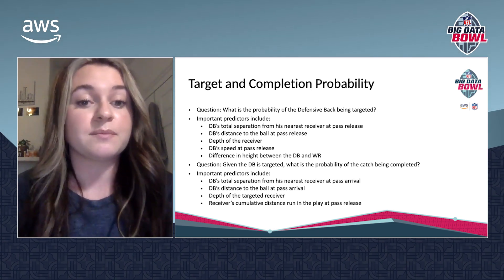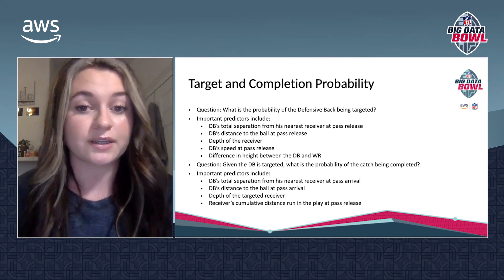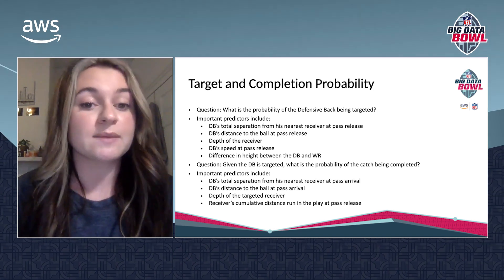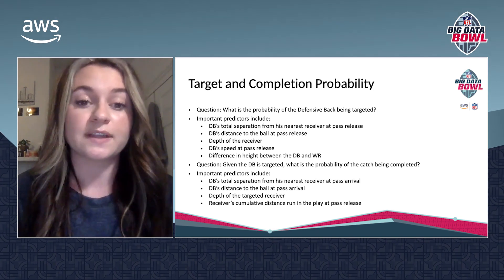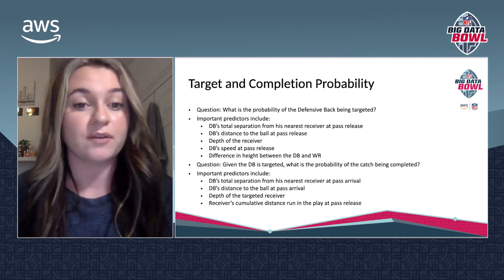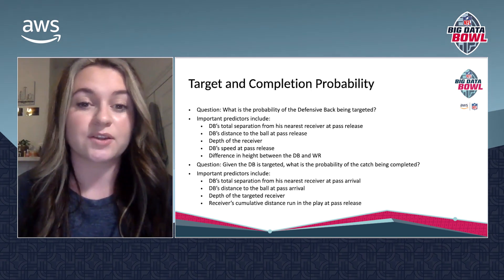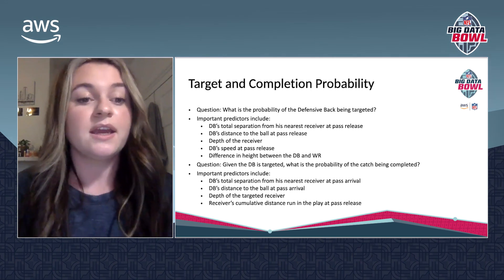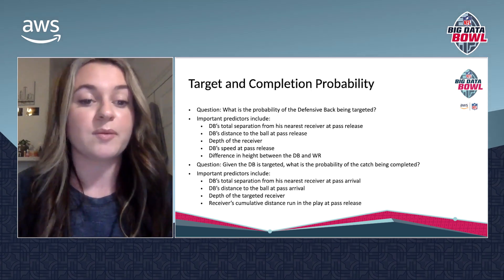The question I aim to answer in my completion probability model is: given the defensive back is targeted, what is the probability of the catch being completed? The important predictors, once the model was output, include the defensive back's total separation from his nearest receiver at pass arrival, the defensive back's distance to the ball at pass arrival, the depth of the targeted receiver, and the receiver's cumulative distance run in the play at pass release.